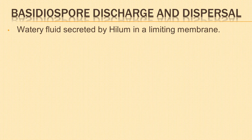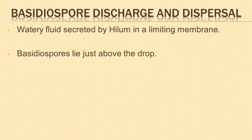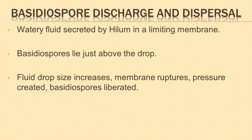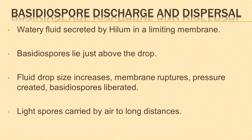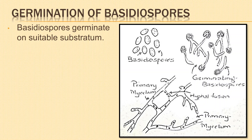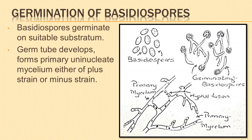When the basidiospore matures, a tiny drop of watery fluid is secreted by the hilum in a limiting membrane. The basidiospore lies just above the drop; the drop increases in size, the membrane ruptures, and pressure is created at the base of the basidiospore. Due to this pressure, the basidiospore is suddenly pushed out of the sterigmata. The spores, being light, are carried away by air to long distances. When basidiospores fall on a suitable substratum, they germinate — a germ tube is formed which develops into a primary mycelium of either plus or minus strain.